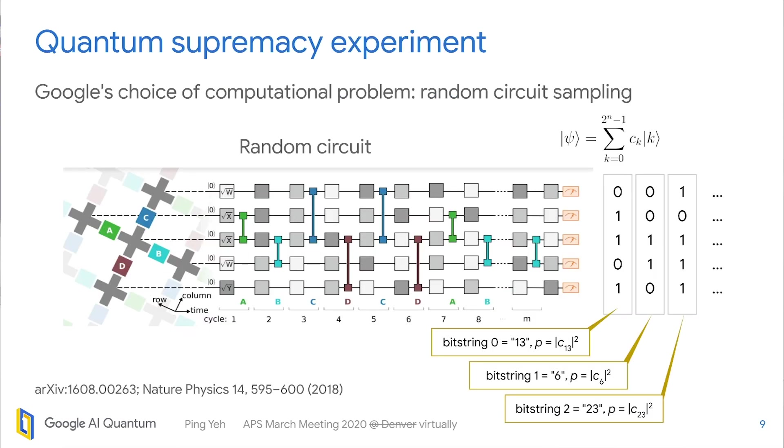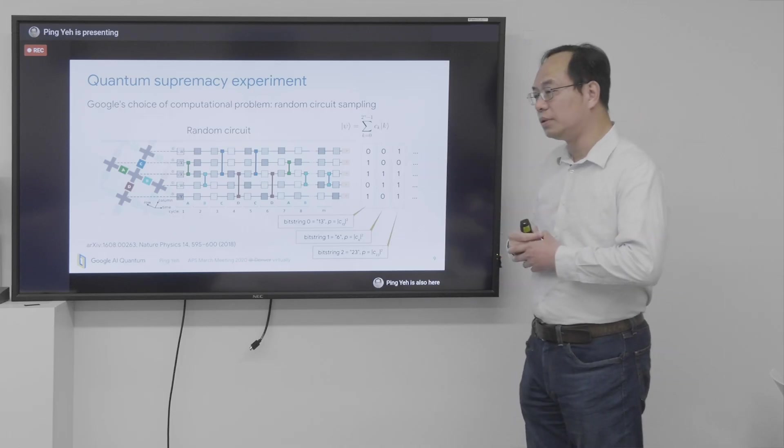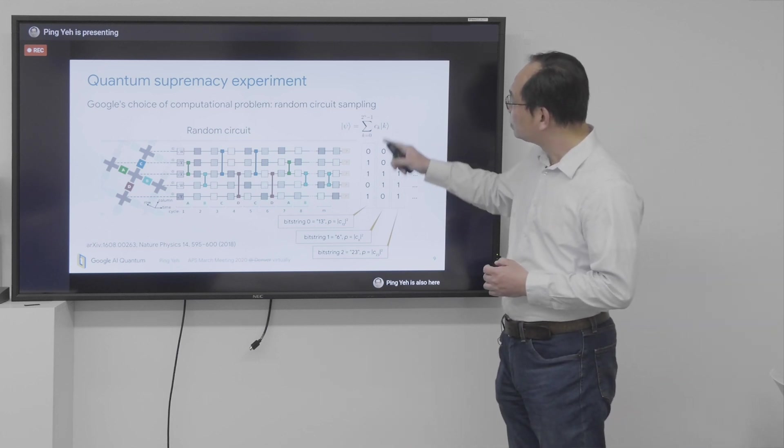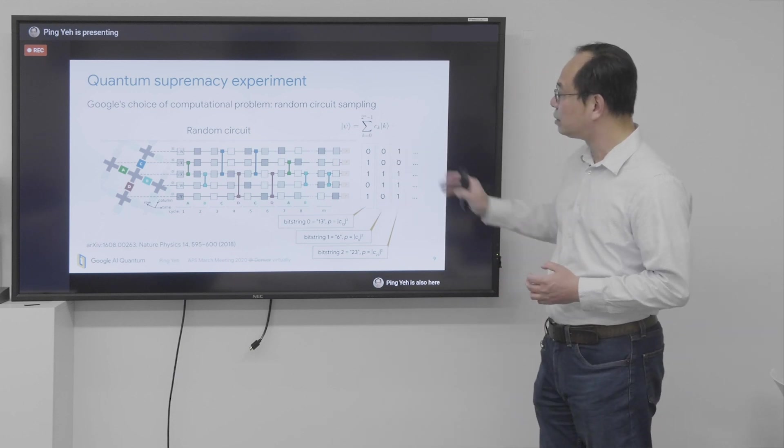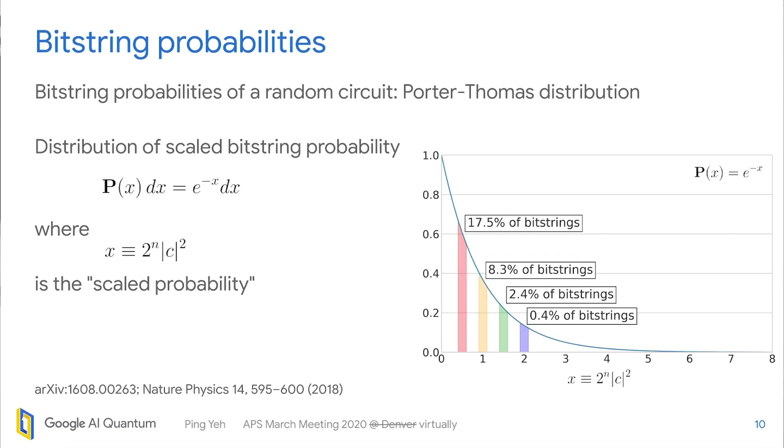So the Google's quantum supremacy experiment is based on the quantum circuit sampling. So this is an illustration of a random circuit. And at the end of the circuit, we come up with a wave function psi, which is a linear combination of, of course, 2 to the n different computational basis states. So you sample those bit strings from this n state many times. And the probability of sampling a particular bit string is basically just amplitude squared. That's standard quantum mechanics.